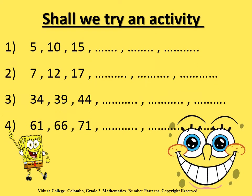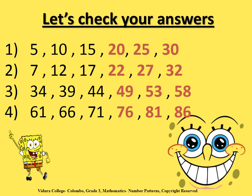Children, shall we try an activity? I have given you 4 number patterns. Find out their gap in between and fill in the number patterns accordingly. Are you ready to check your answers? The gap between each and every number in all these 4 number patterns is 5. So the answers for the first one: 5, 10, 15, 20, 25, 30. Second one: 7, 12, 17, 22, 27, 32. Third one: 34, 39, 44, 49, 53, 58. And last one: 61, 66, 71, 76, 81, 86. Did you get all the answers correct? Well done.